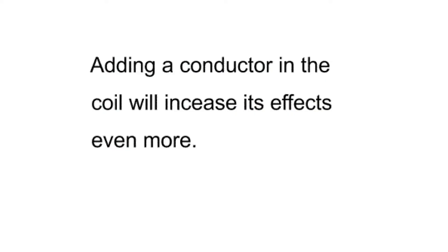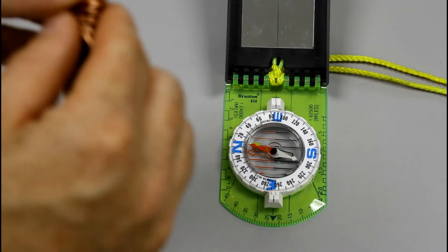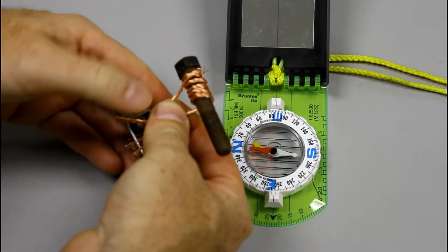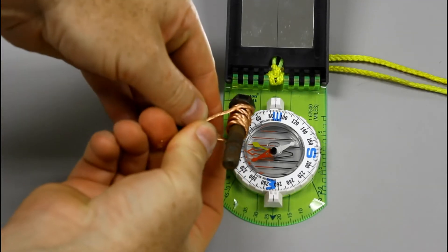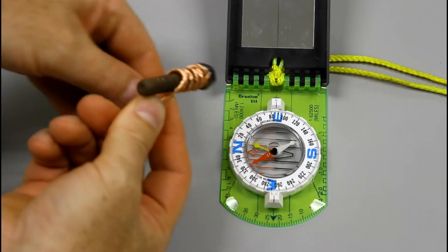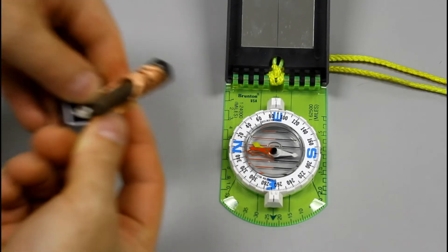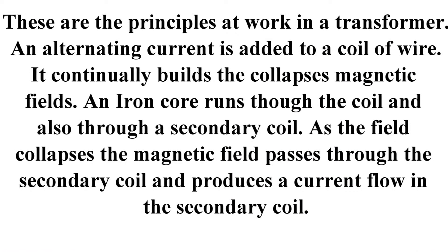Adding a conductor in the coil will increase its effects even more. Now I'm going to put a bolt in there. These are the principles at work in a transformer.